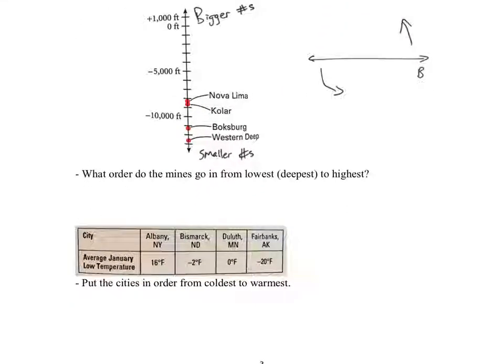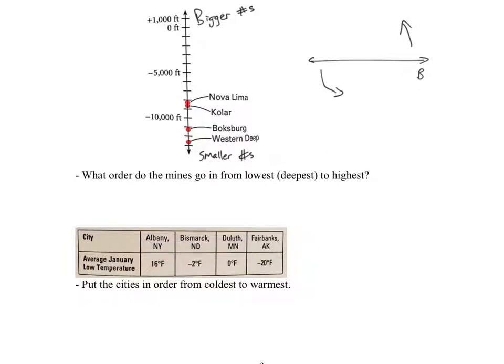These here, I slurped this out of the book, it's going to be the depths of different mines. And if we're going to do the smallest to the biggest, we have to start down there at the bottom. So the smallest is going to be the Western Deep. And then we really just kind of work our way up, like on a number line, you'd work left to right. So then we have the Boxburg, then the Kohler, and then the Nova Lima.